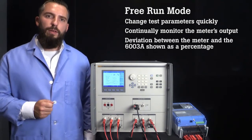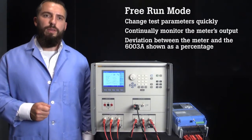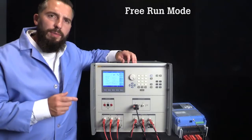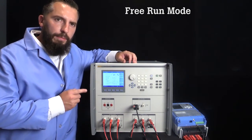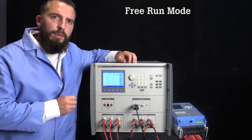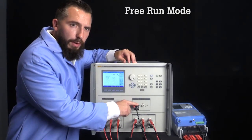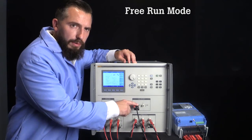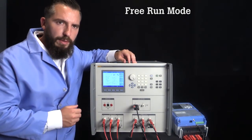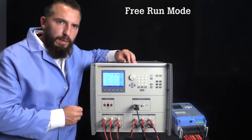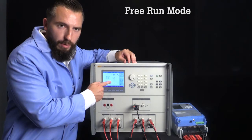Free Run allows you to quickly change the test parameters by continually monitoring the meter's output to verify that the correct meter constant is being used. The deviation between the meter and the 6003A is continuously calculated and shown as a percentage on the display. To demonstrate, I've configured a test for 200 volts AC, 1 amp, at 50 hertz. Since we'll be measuring the pulse output of the meter, I've connected the pulse output of the meter under test to input 1 of the 6003A.